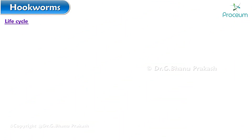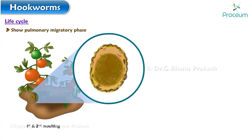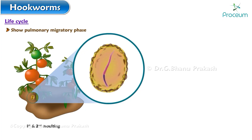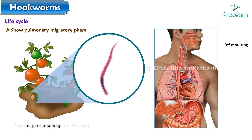Hookworms also show a pulmonary migratory phase. Their first and second molting occurs in soil; after the second molting, the infective form — that is, filariform larvae — is formed. It's important to note that their third molting occurs in the esophagus, and the fourth molting in the duodenum, where the adult form is achieved.